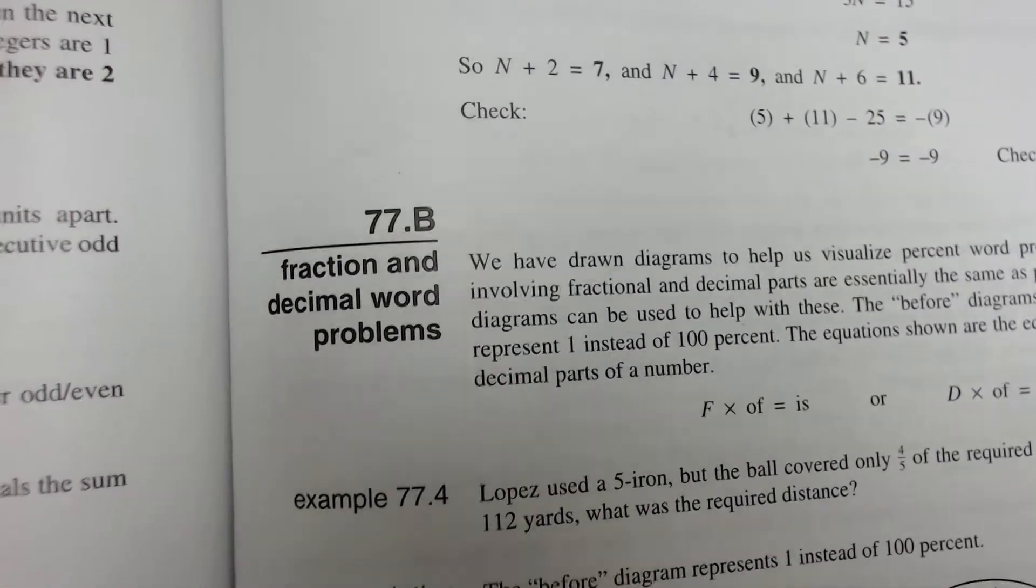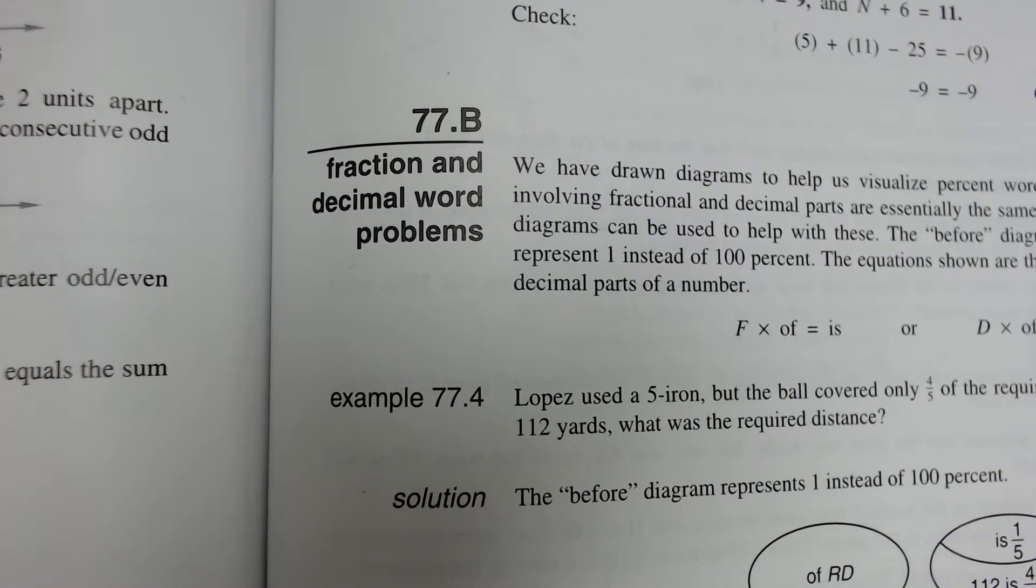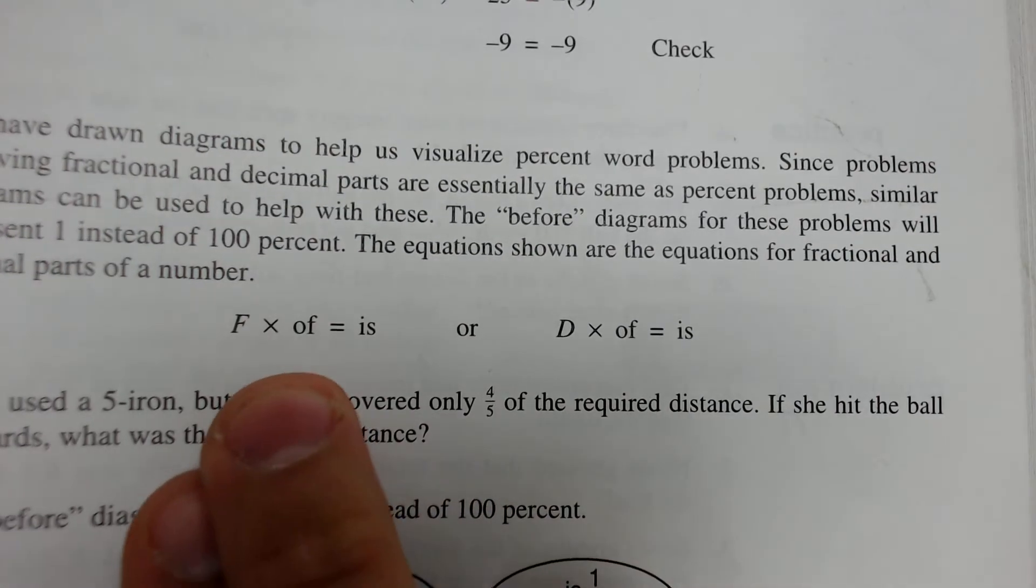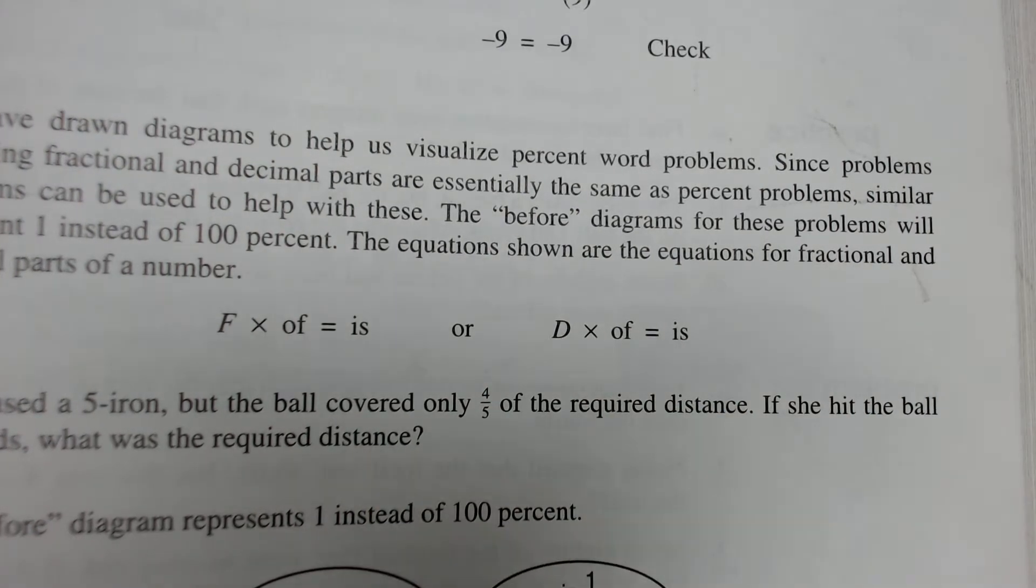Alright, now let's talk about fraction and decimal word problems. The book tells you to draw a diagram. On the problem, they might tell you to draw a diagram. I will not make you draw a diagram. You do not have to draw a diagram. But, these problems follow equations that we've already learned. Fraction times of equals is or decimal times of equals is. Or, you can remember that of is kind of like multiplying, is is like an equal sign.